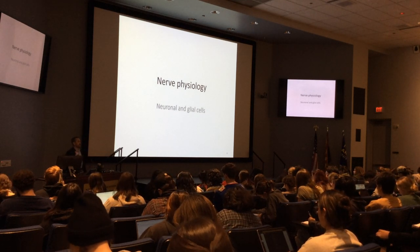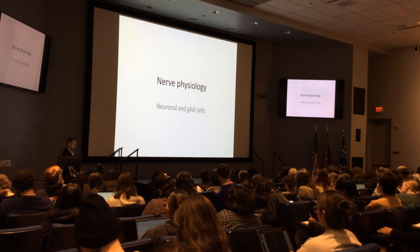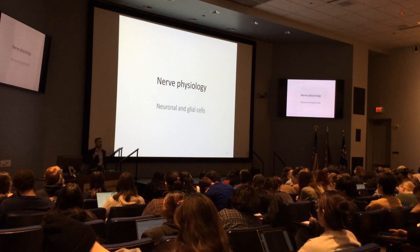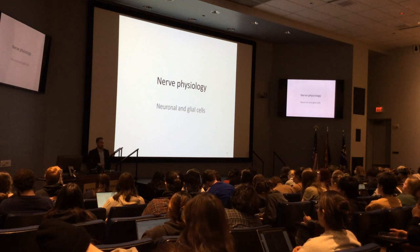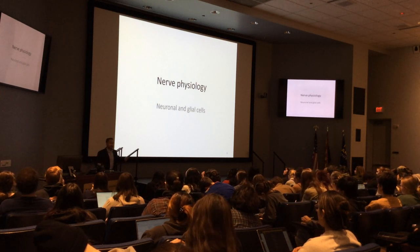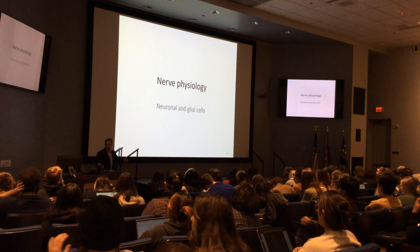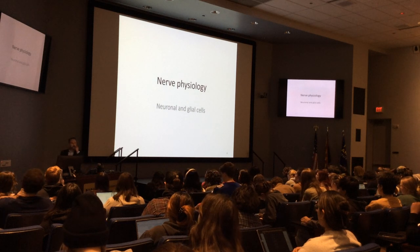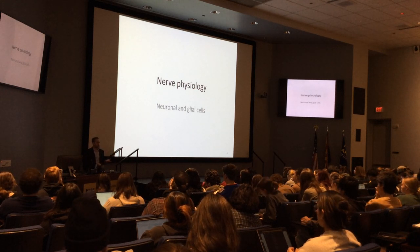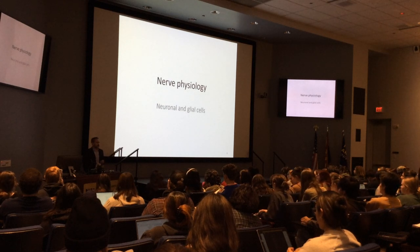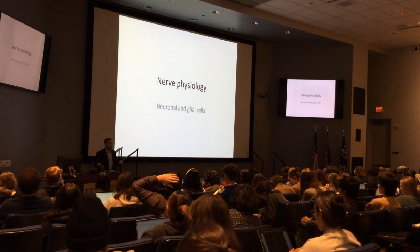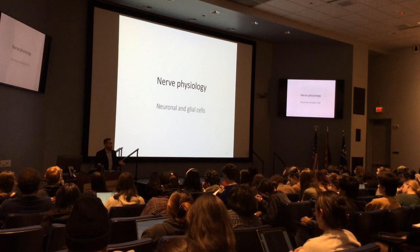Now we're going to start diving into the microanatomy — nerves and glial cells. I'm going to post tonight pictures of glioblastoma from a grad student of mine in the lab. She's growing them; they came from a patient. Senator John McCain passed from glioblastoma. So glioblastoma is a cancer of the central nervous system in the brain, primarily of glial cells. That's why it's called glioblastoma. So what is a glial cell?